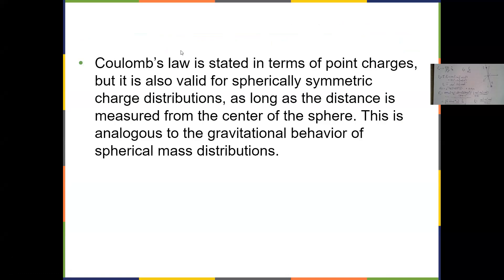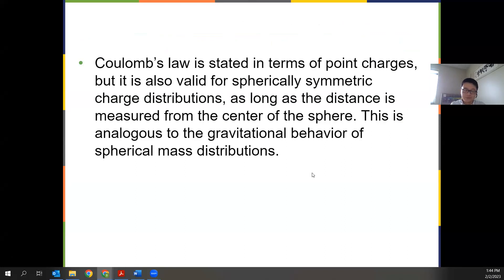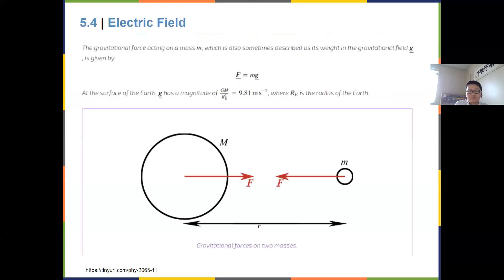One more note: we've been talking about point charges. If you have two uniformly charged spherical shells, you can also treat them as point charges. This is similar to gravitational behavior for spherical mass distributions from last semester. Now let's move on to the next section on electric field, revisiting the gravitational field analogy.